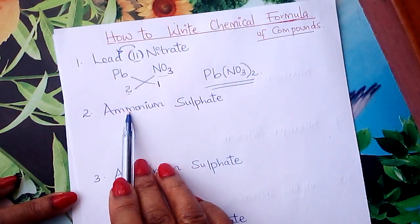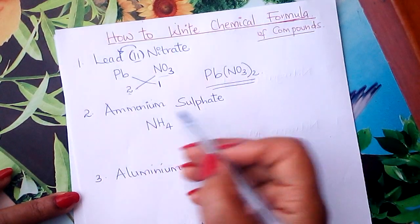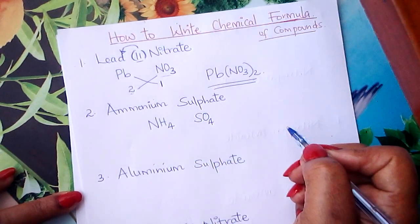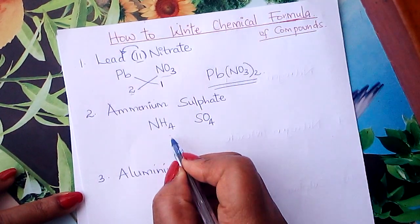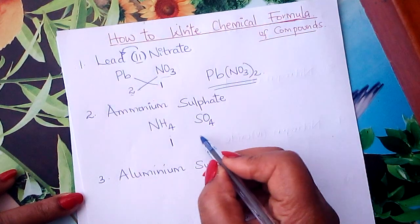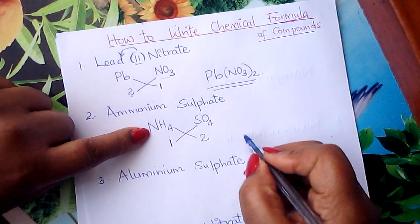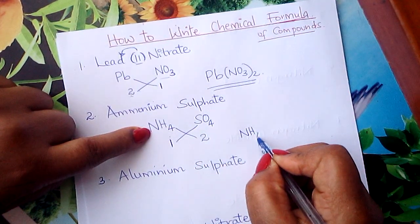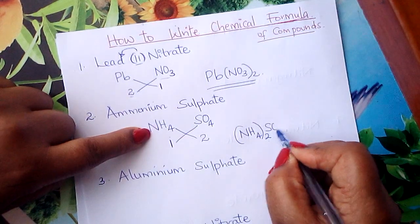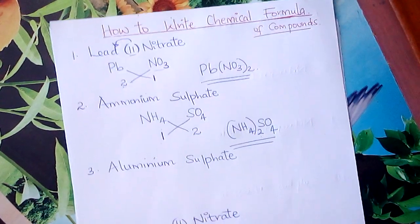We go to number 2: ammonium sulfate. It is made up of ammonium — symbol NH₄, ignore the charge — and sulfate SO₄, ignore the charge. Valency for ammonium is 1, valency for sulfate is 2, even from the valency song. Then interchange: ammonium takes 2 and it is a radical, so put it in brackets — (NH₄)₂. Then SO₄ is another radical but it just takes 1. So this is ammonium sulfate: (NH₄)₂SO₄.